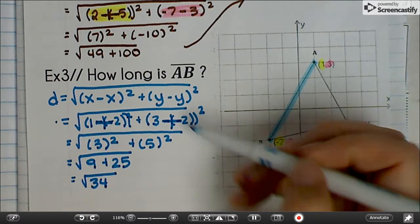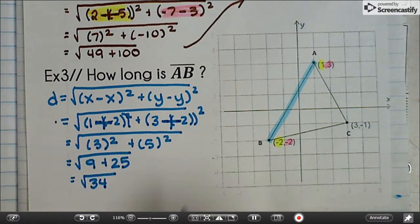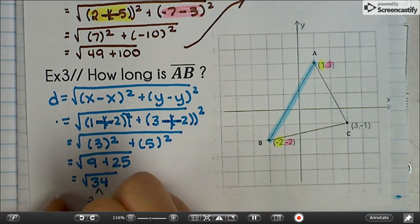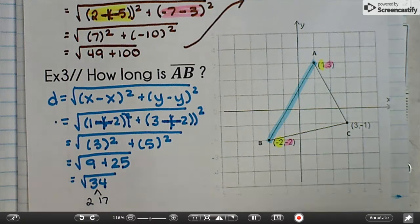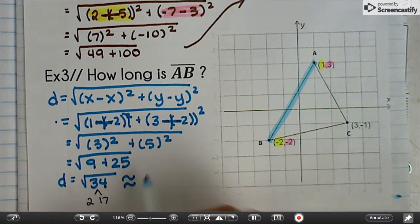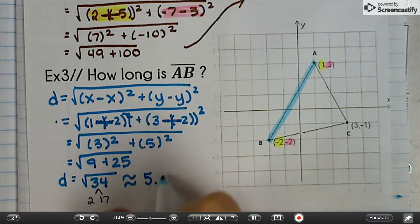And that equals the square root of 34. See how I did not take the square root off the whole time until I got to the bottom. 34, we can try to prime factor. It's going to be 2 and 17. So not prime factorable. This is simplest radical form.